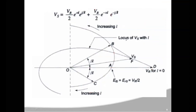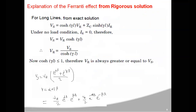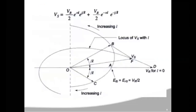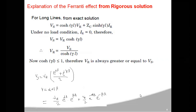The sum of the two vectors OB and OC will equal the total sending end voltage. From the vector diagram, you can see that the magnitude of VS will be less than the magnitude of VR. That means receiving end voltage is greater than sending end voltage — this effect is called the Ferranti effect. This is how you can explain the Ferranti effect from the rigorous solution.